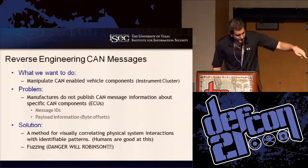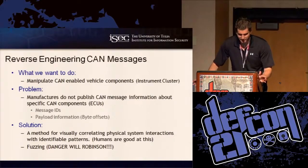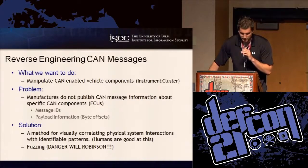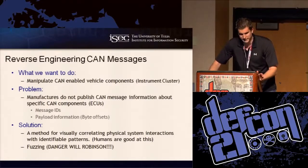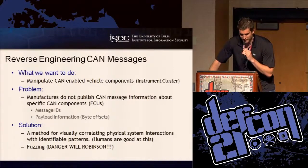So let's get back to the CAN Clock instrument cluster. We want to manipulate the tachometer and speedometer, but manufacturers don't publish the CAN IDs or specific payload information to do that. We used several methods to figure out how to control the various functionality. The first was a method for visually correlating physical system interactions with identifiable patterns — humans are inherently good at recognizing patterns on a graph, such as something indicative of vehicle speed or engine speed. For things we couldn't use that method on, we used some simple fuzzing techniques.